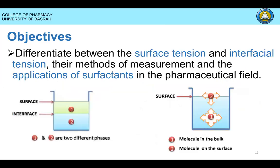Then we're going to talk about when we have a two-phase system. When you have a two-phase system, there is a boundary between them. What are the properties of this boundary? These properties are going to improve the stability of our subsequent dosage forms — when you have multiple-phase dosage forms, for example, emulsions, creams, suspensions, and so on. One of these properties is the surface tension or interfacial tension, from which we're going to understand what we mean by surfactants and how we can use surfactants in the pharmacy field.